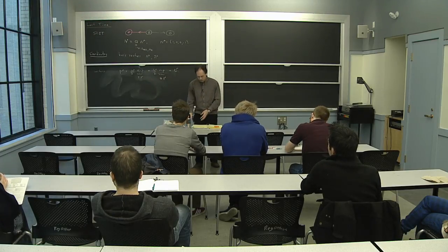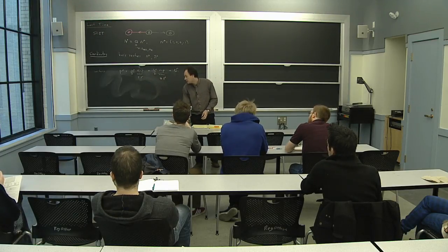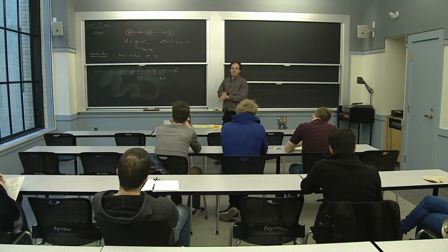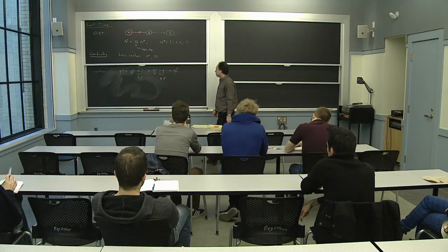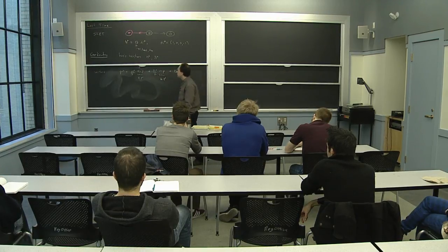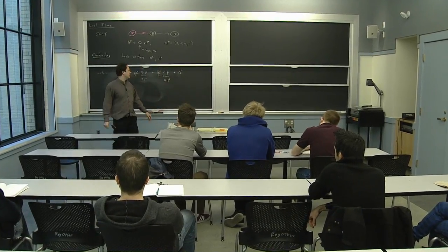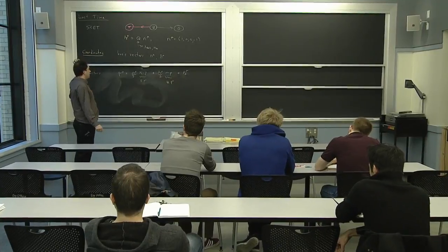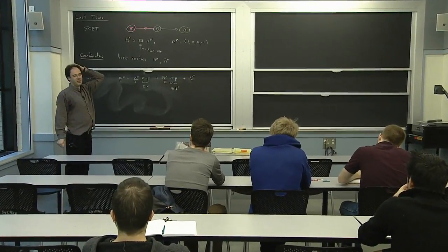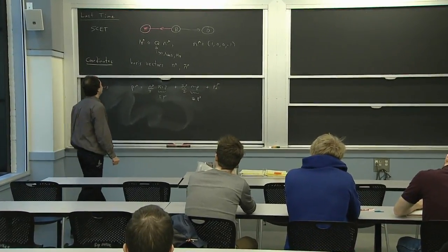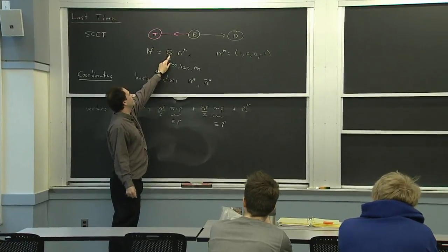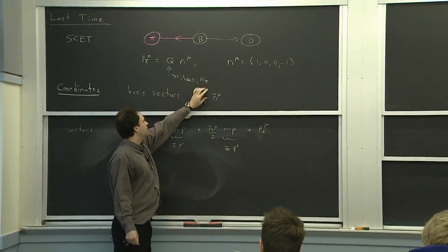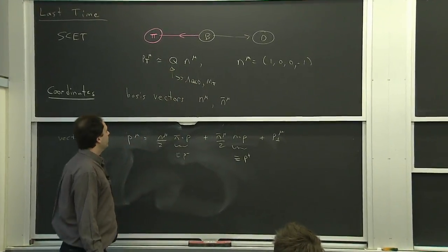That's roughly where we were. So last time we started talking about SCET — we said it's going to be a theory that can describe energetic hadrons and energetic jets. Our first example was discussing a process with an energetic hadron, which is this pink pion. So the pion has a large momentum, large energy.